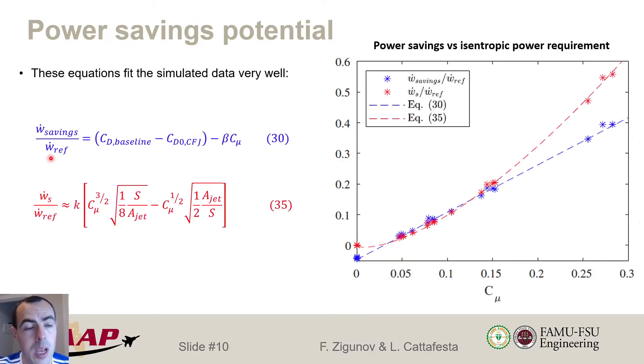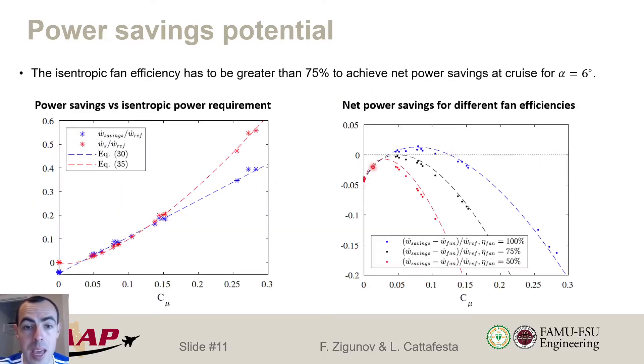So now that we have these two curves, we can plot them as a function of Cμ. So the blue curve would be the savings, which takes shape of a line. And the red curve is the power consumed by the fan, which takes the shape of a parabola based on the three halves exponent. We see here that when the blue curve is above the red curve, we have net power savings. So we can actually subtract these two curves and get a curve for the net power savings. We also, this red curve here is the isentropic power required by the fan. But we can assume an isentropic fan efficiency, and then we can play around with this value of eta fan to generate different curves. We see that at 100% efficiency, we get net power savings at a very wide range. And then this range is diminished to no power savings at any point for a fan efficiency of 75%. So this would be for this specific design that we described. And we already have net power savings even for a reasonable efficiency of 75%.